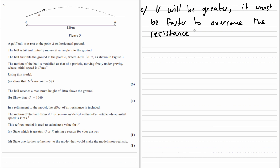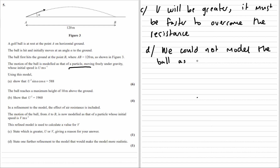State one further refinement to the model which would make it more realistic. The ball has been modelled as a particle, so we could instead not model it as a particle and take its dimensions and size into account.